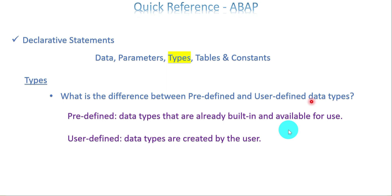It is very rare that we create a data type the same as character or integer — same like the predefined data type. So mostly we create a user-defined data type as a structure, because the structure depends on every development. We have options other than that, but we are not often replicating the predefined data type as a user-defined one. For example, wanting a character with a different name or replicating integer — we do not do that very often, but we have the option. This is the difference between predefined and user-defined data type.